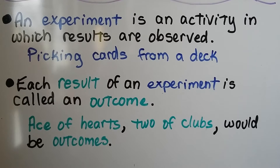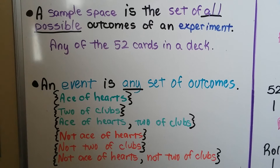An experiment is an activity in which results are observed — like picking cards from a deck. Each result of an experiment is called an outcome. So if we pick an ace of hearts, that's an outcome; if we pick a two of clubs, that's an outcome. A sample space is the set of all possible outcomes of an experiment, so it would be any of the 52 cards in a deck. Our sample space is 52.